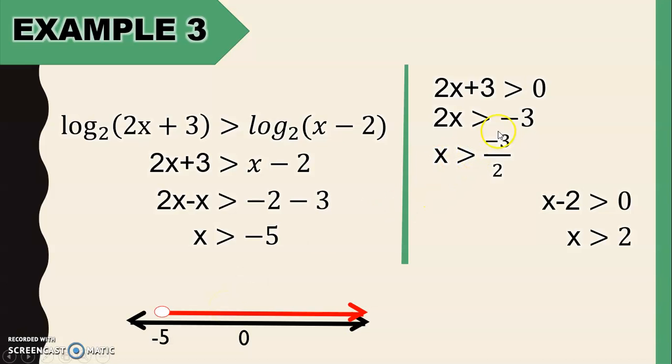Let's now graph x greater than negative 3 over 2. Let's plot negative 3 halves. Then, since it doesn't have an equal sign, negative 3 halves is not included in the solution. So open circle. Greater, so the direction is to the right. x greater than negative 3 halves. This is its graph.